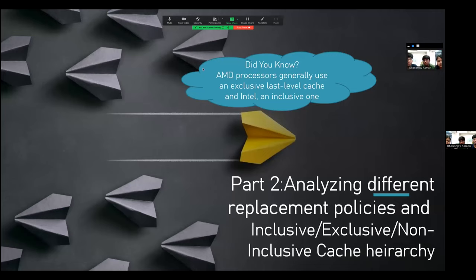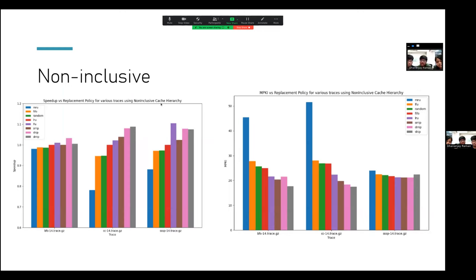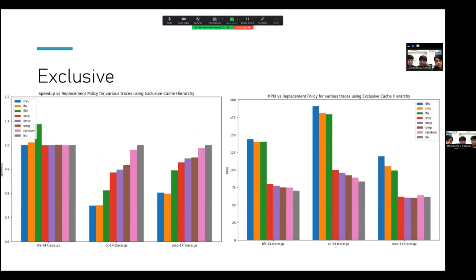So now we'll go on to inclusive, exclusive and non-inclusive cache hierarchies. First we'll just compare them directly using just LRU replacement policy. You can see that we have taken the non-inclusive cache hierarchy as the baseline. That is because that is the default implementation that Champsim uses. And another thing which you can see is that exclusive is performing very poorly, while inclusive and non-inclusive are performing almost equally. Now we'll also look at how each replacement policy performs among themselves for each inclusion policy. So this is for the non-inclusive cache. There is also a similar graph for inclusive and exclusive cache hierarchies. These are the different replacement policies which we have plotted this for: least recently used, least frequently used, first in first out, SHIP, DRRIP, SRRIP, random and least recently used.